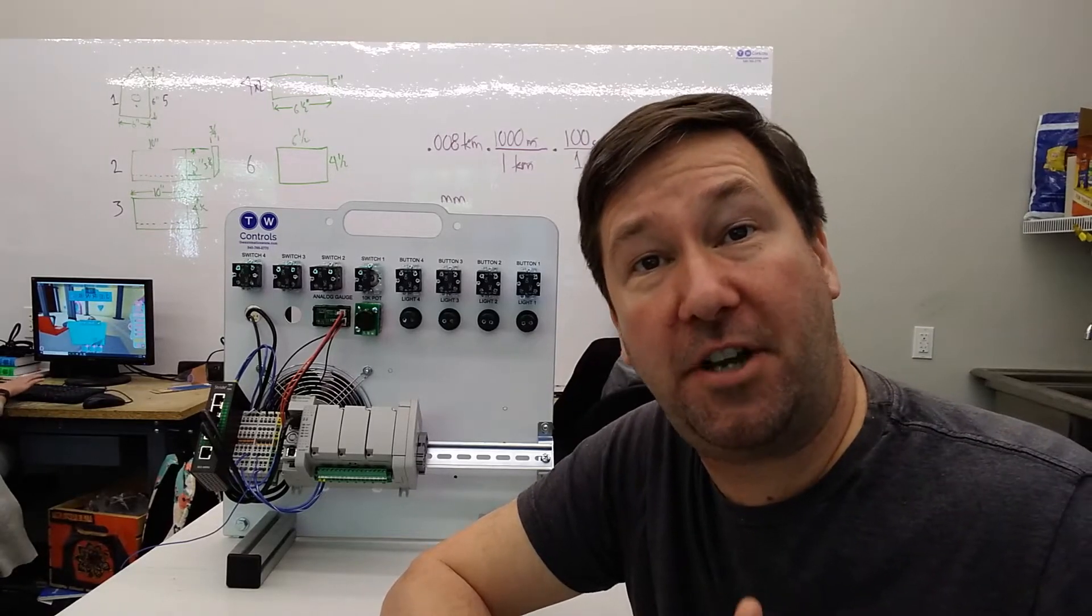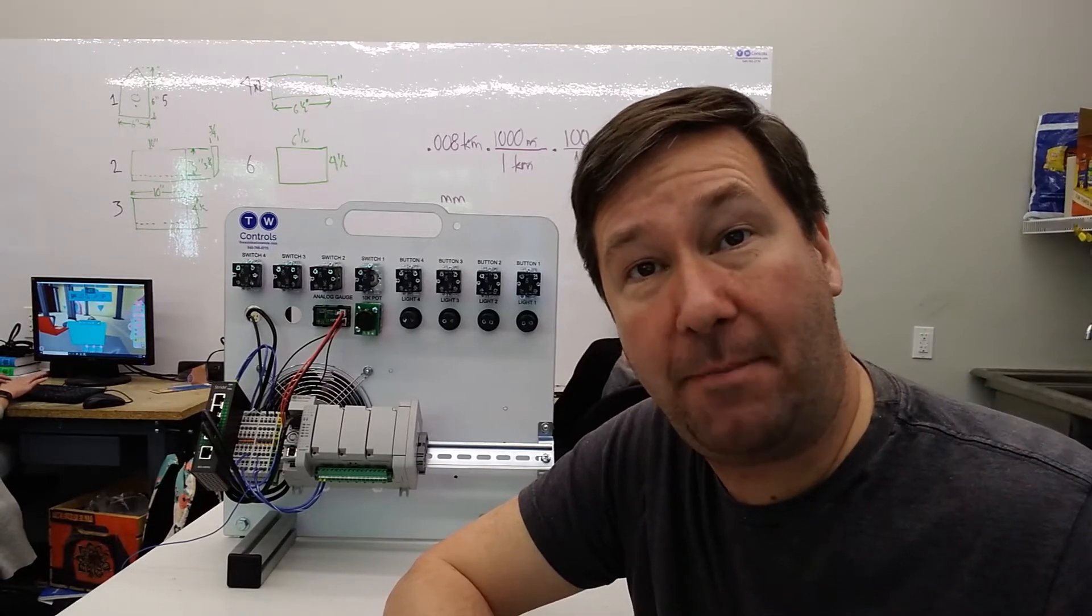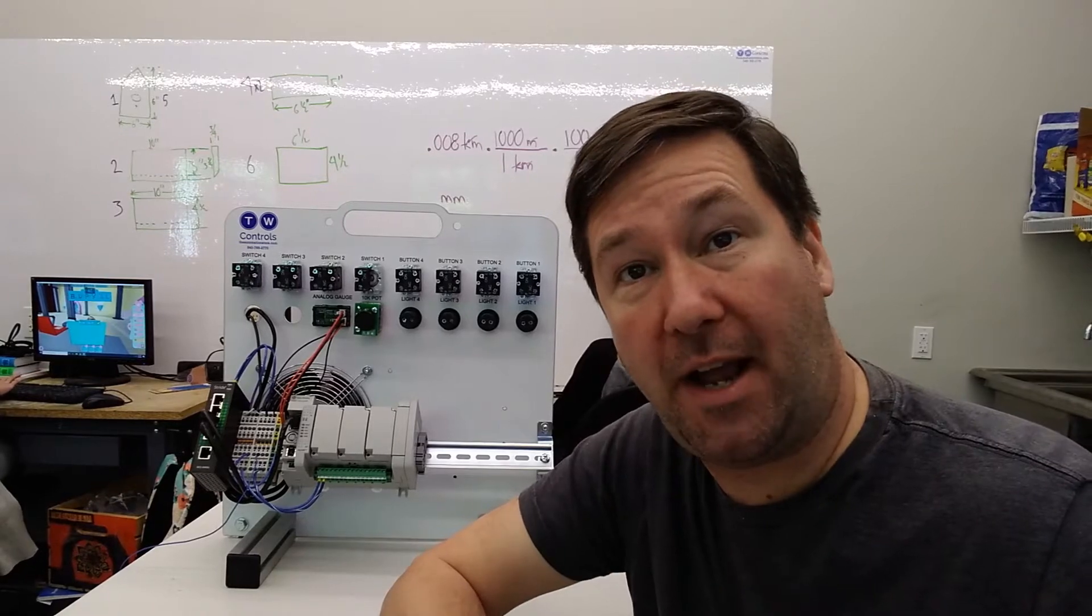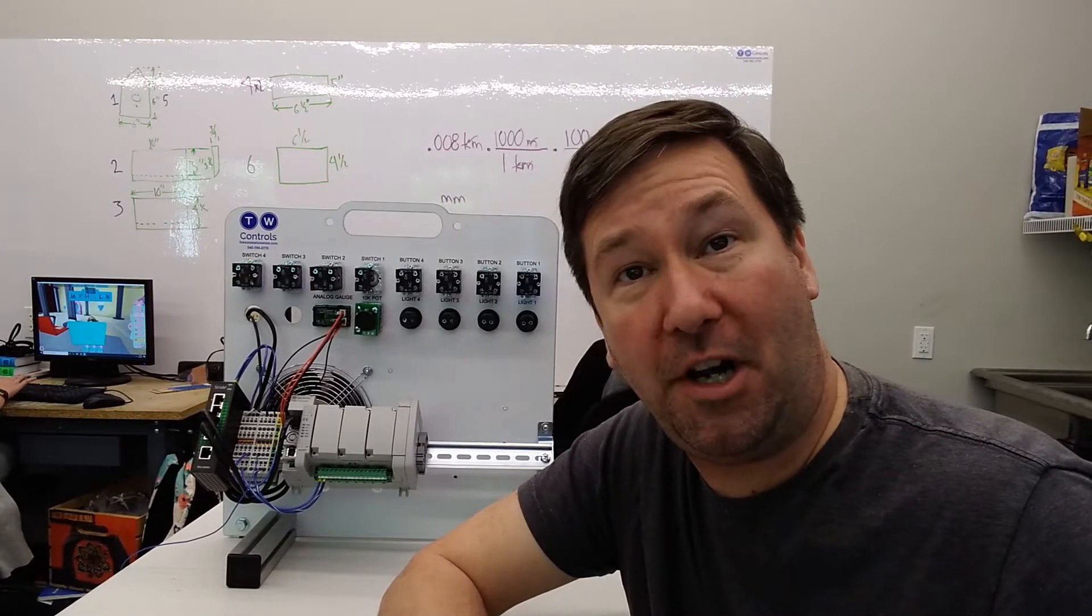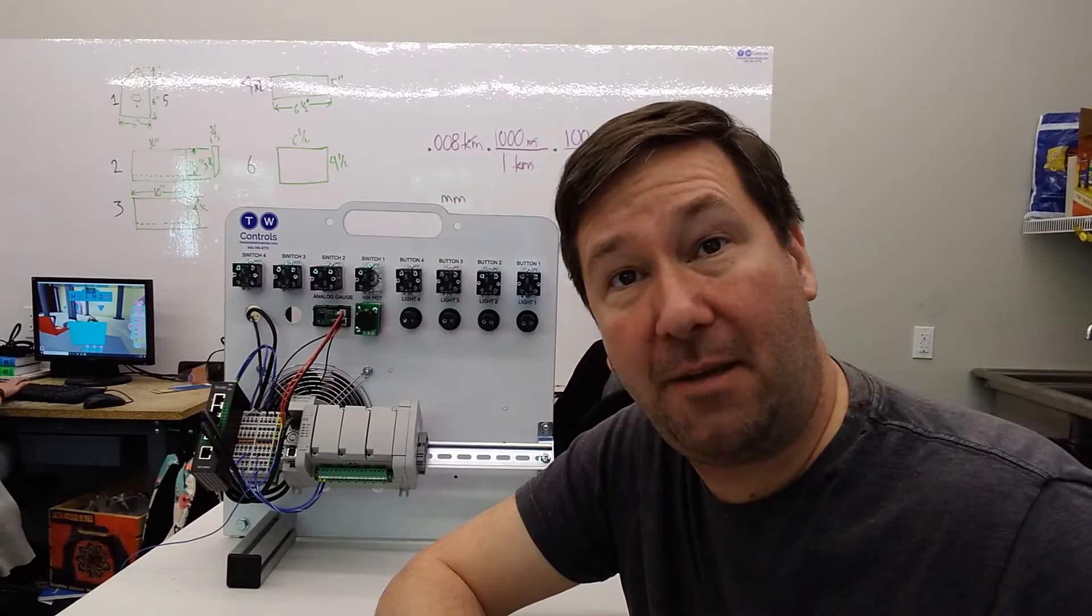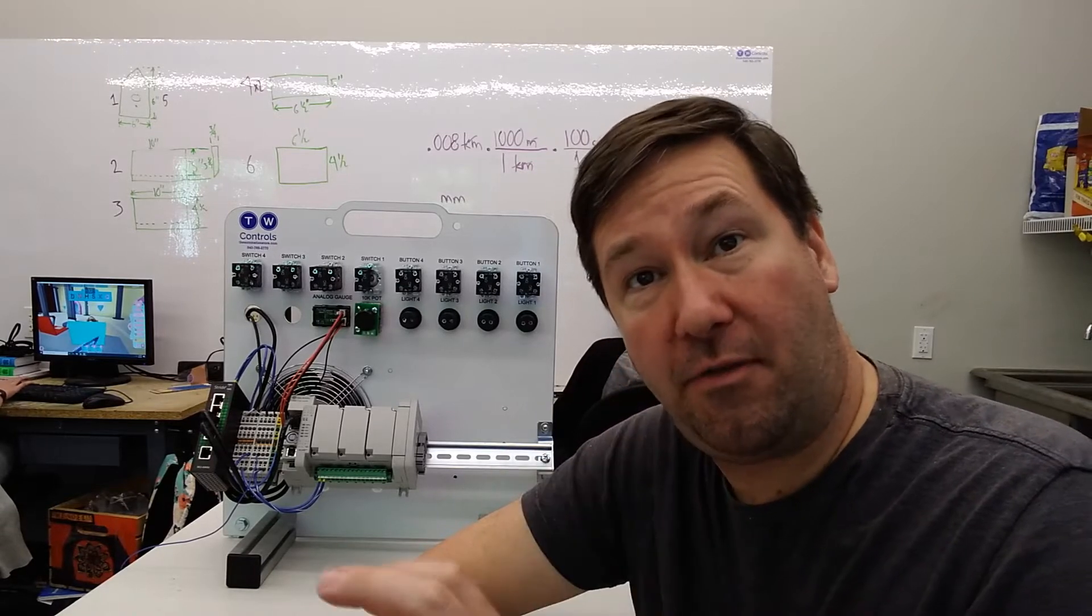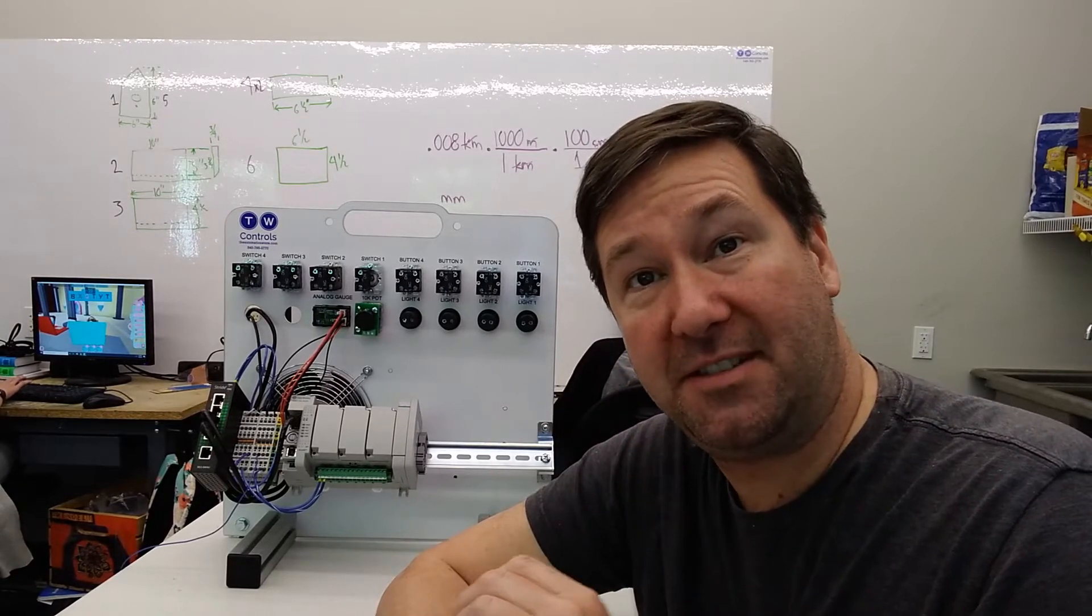Hi, this is Tim. Today I want to show you how to read and write the IP address of an Automation Direct HO-ECOM100 module. This is the Ethernet module that can be plugged into the DLO5 or the DLO6 PLC.